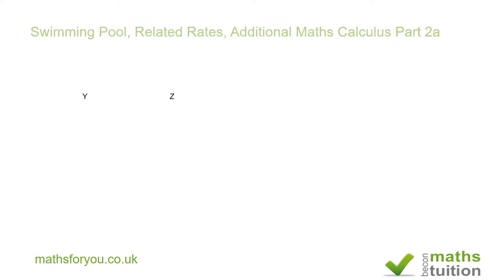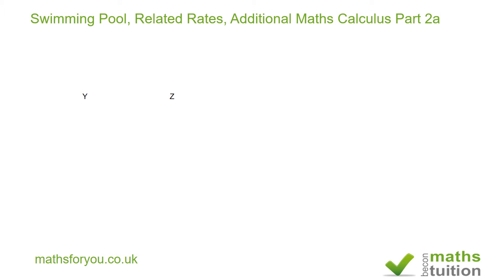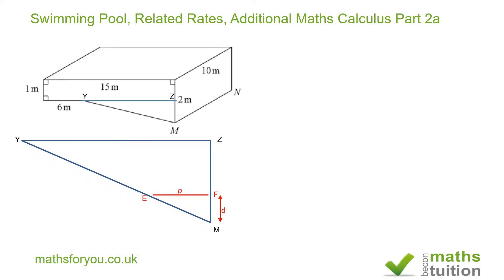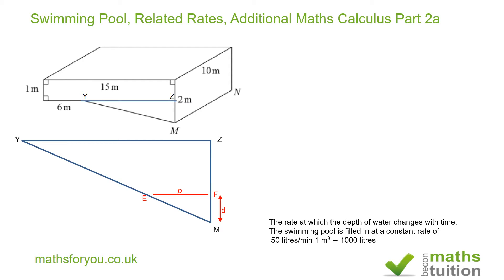Hello and welcome to this exercise on swimming pools. This is a supplement to what I did earlier for an IGCSE question — I'll now use calculus to achieve the same result. What we want to find is the rate at which the depth of water changes with time. The swimming pool is filled at a constant rate of 50 liters per minute, and one meter cubed is equivalent to 1000 liters.